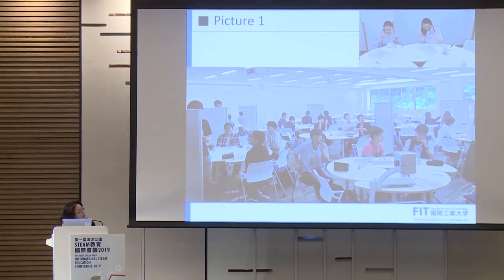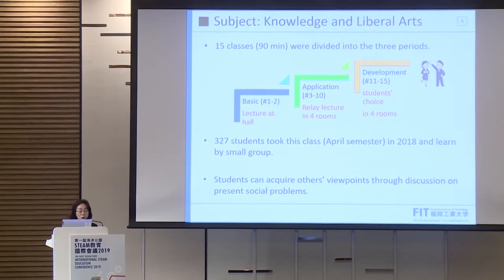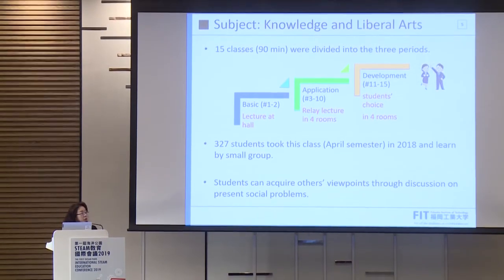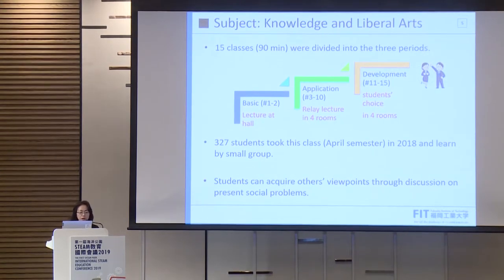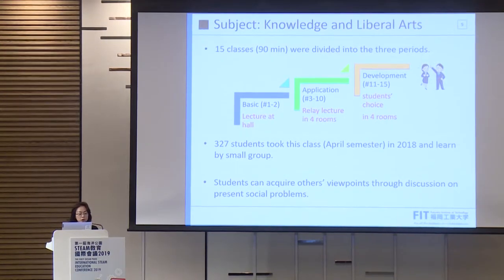Students gather in small groups to talk and discuss each theme. We divided 15 classes in one semester, and each 90 minutes were divided into three periods: first basic, then application, and development. 327 students took this class in the April 2018 semester and learned in small groups. Students can acquire others' viewpoints through discussion on present social problems.